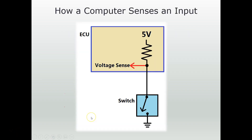Let's look at a basic input circuit on a computer. Here we have a computer, or an ECU, and we have a switch. The job of this circuit is for the computer to determine whether this switch is open or closed. We start with a voltage source — this could be 12 volts, 8 volts, but most commonly on an automotive sensor circuit we use 5 volts. We have a 5-volt voltage source, then a resistor, then it connects to a switch which is grounded when closed. In the middle here, we measure or sense the voltage.